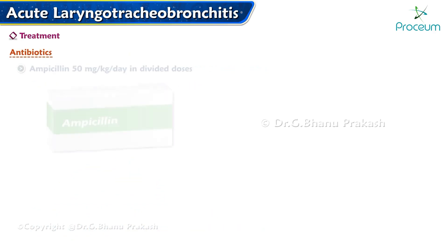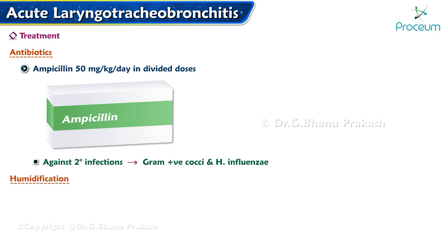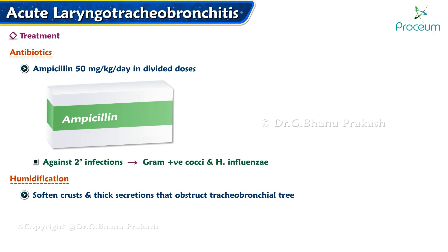Antibiotics: Ampicillin, given at a dose of 50 mg per kg per day in divided doses, is effective against secondary infections caused by gram-positive cocci and Haemophilus influenzae. Humidification aids in softening crusts and thick secretions that obstruct the tracheobronchial tree.